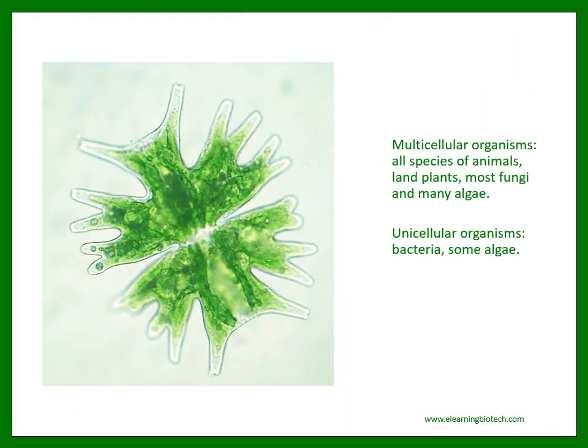For instance, this algae looks very different from the lung cells in the previous slide. Like with everything else, some have a lot, some a little. Multicellular organisms have multiple cells and include all species of animals, land plants, most fungi, and many algae. Unicellular organisms have just one cell and include bacteria and some algae.